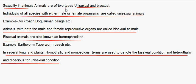Sexuality in Animals: Animals are also of two types — unisexual and bisexual. Individuals of species with either male or female organisms are called unisexual animals; for example, cockroach, dog, and human beings. Animals with both male and female reproductive organs are called bisexual animals, also known as hermaphrodites — for example, earthworm, tapeworm, and leech. In fungi and plants, homothallic and monoecious denote the bisexual condition, while heterothallic and dioecious denote the unisexual condition.